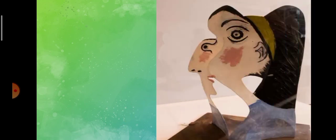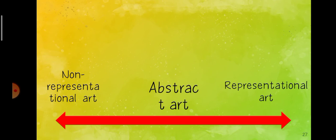Here is an example showing the relationship — not the difference — among abstract, representational, and non-representational art. Representational is the extreme representation of the subject, non-representational has no object, and abstract sits in between.